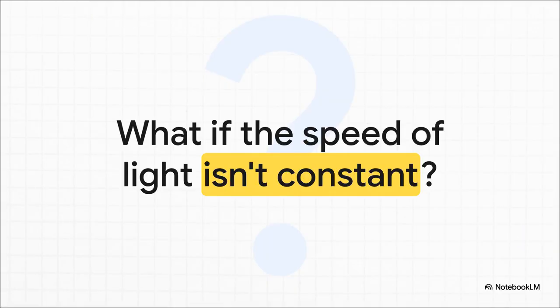But what if it's not? Just think about that for a second. What if the cosmic speed limit actually changes depending on where or maybe even when you are in the universe? It sounds like something straight out of science fiction, right? But here's the thing. Brand new data combined with a bold new theory is forcing physicists to take this idea very seriously.